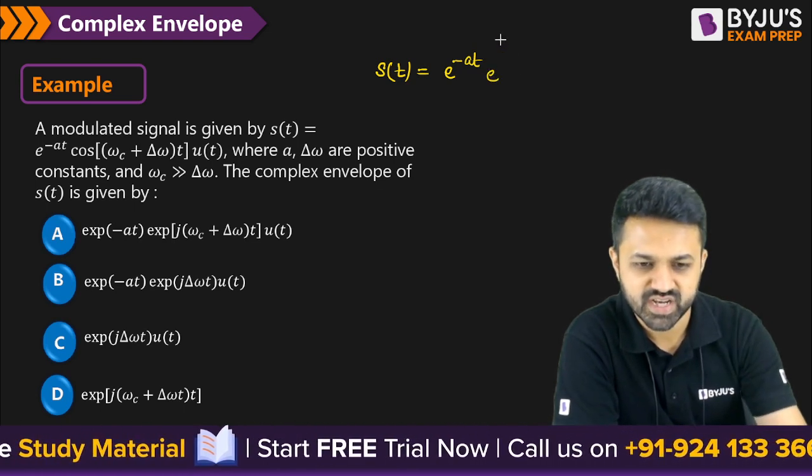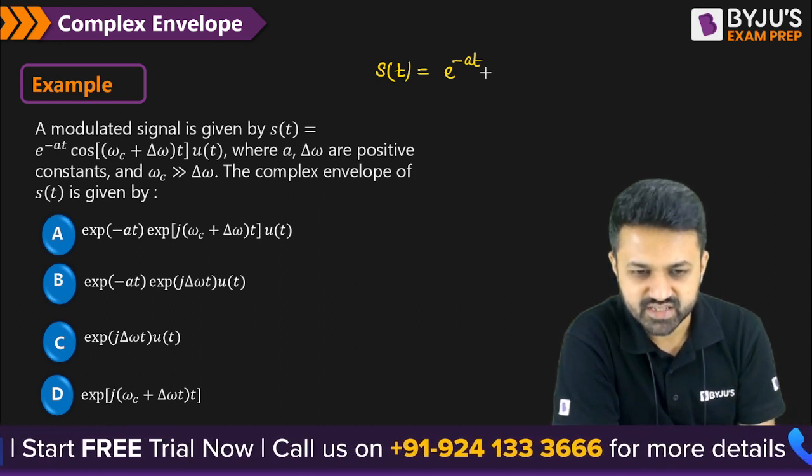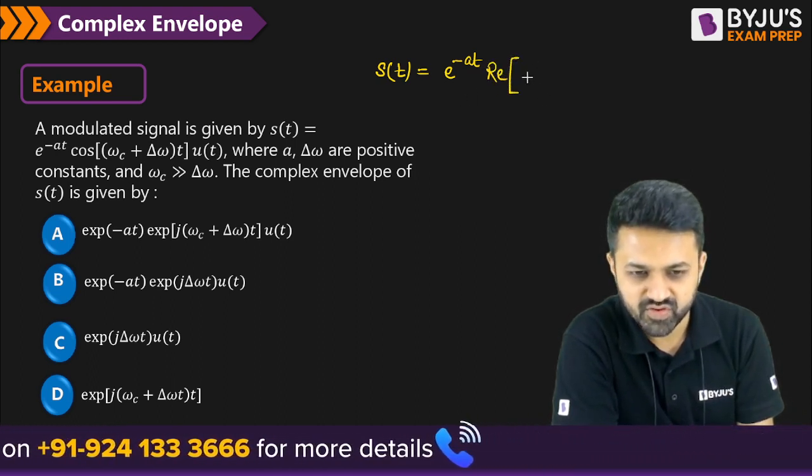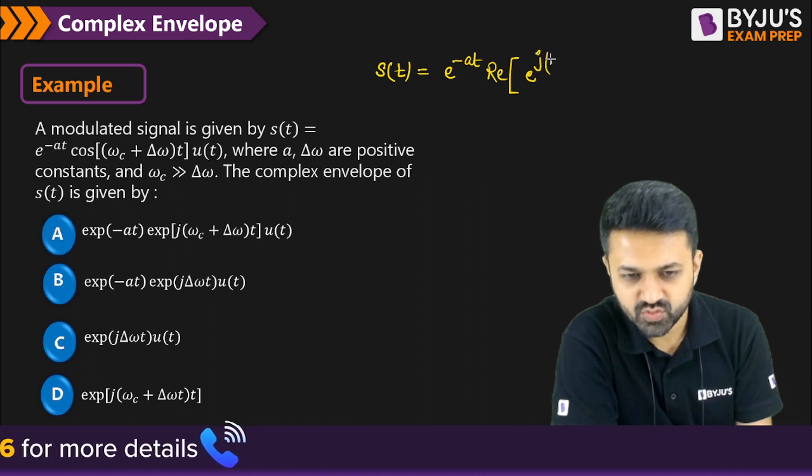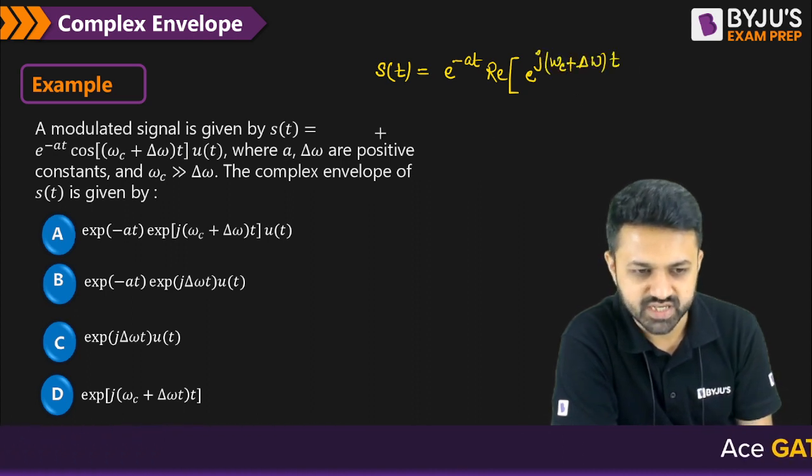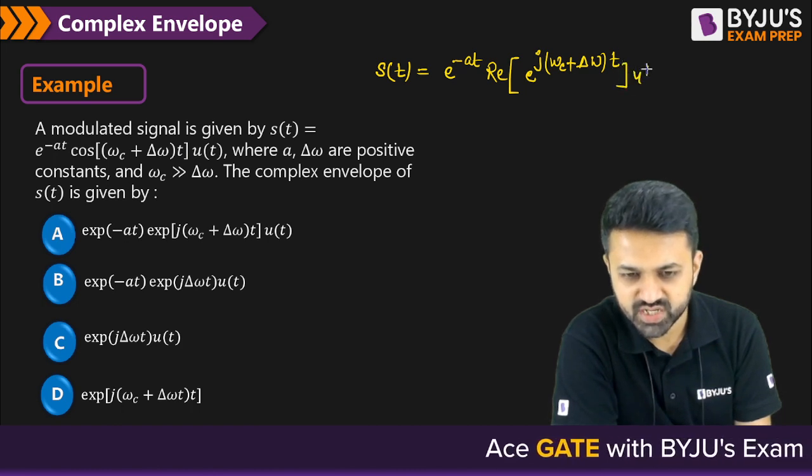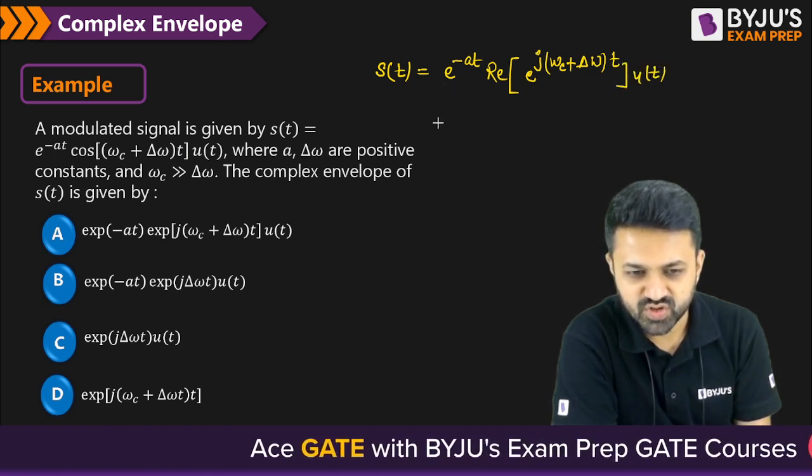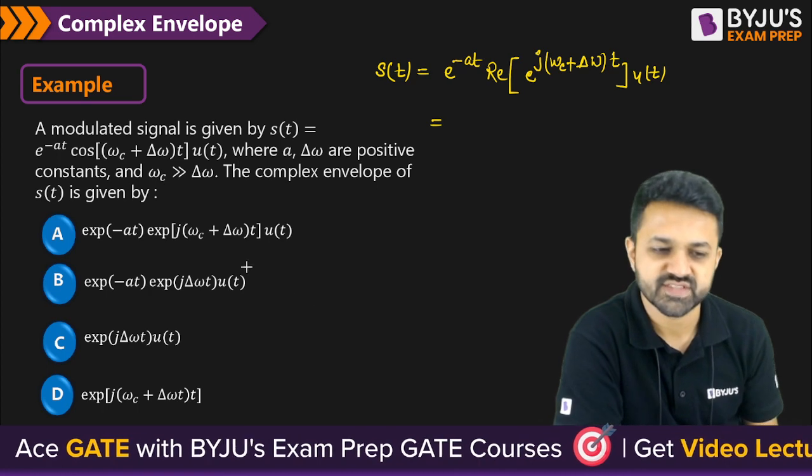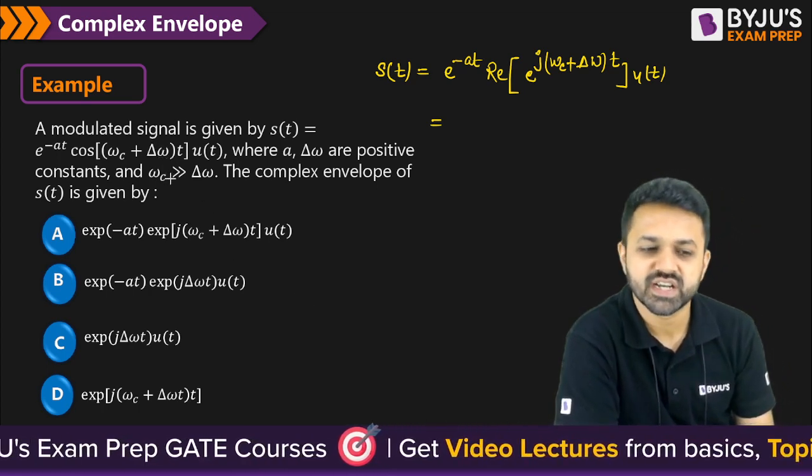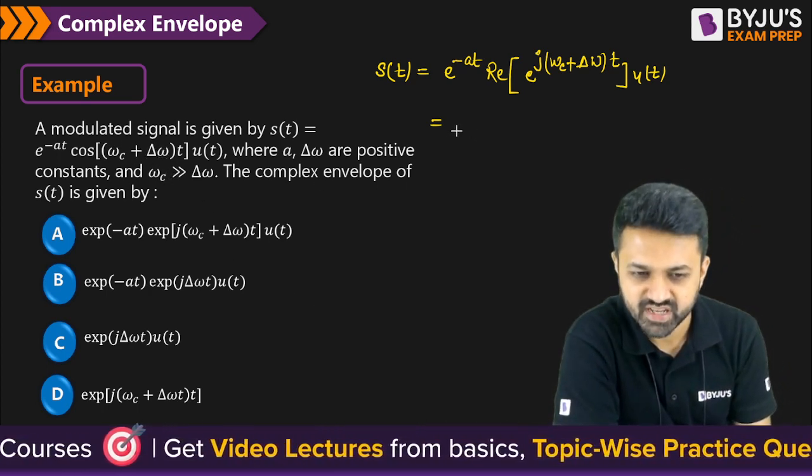This is e to the power... How can we write the cos signal? That is nothing but the real part of e^(j(ωc + Δω)t). And then bracket closed and u(t). So you can write in terms of reference frequency because it is a modulated signal. The reference frequency will be the carrier frequency.